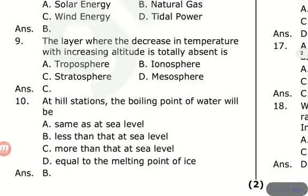At hill stations, the boiling point of water will be: the same as at sea level, less than at sea level, more than at sea level, or equal to the melting point of ice. The answer is less than at sea level. As we go higher, atmospheric pressure decreases, so the boiling point of water also decreases.